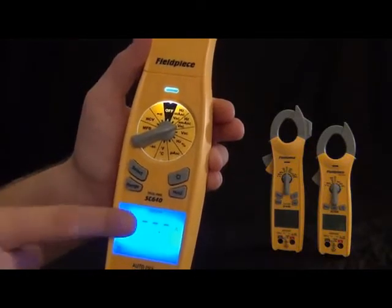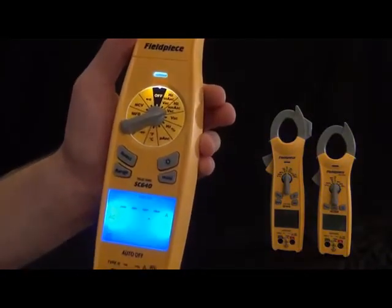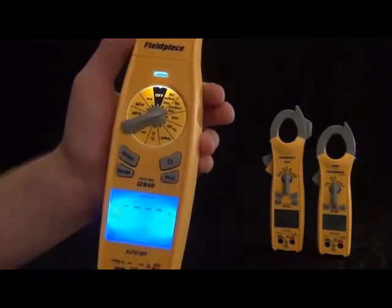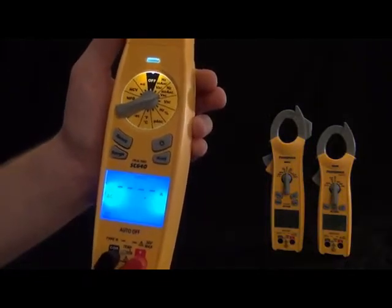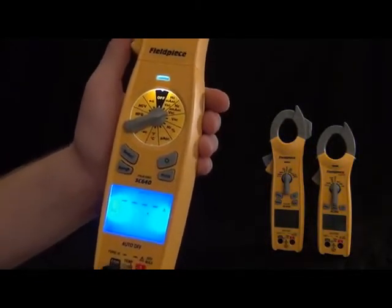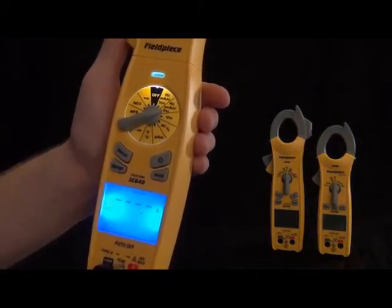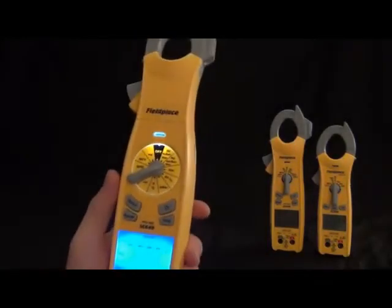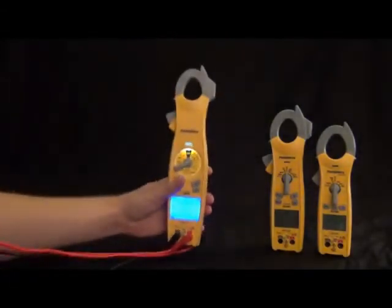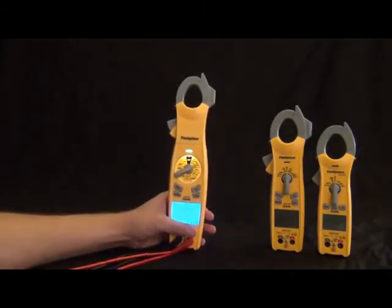Now we got the SC400 series, and this particular one is the SC440. You'll notice this is also a dual display, just a nice mid-size package. This one still has the magnet on the back, so you can get it up out of the way. It still has the inrush, just like the 600 series.